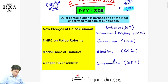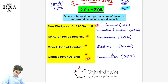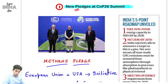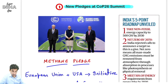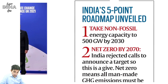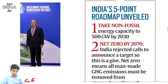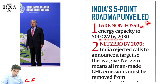Today is 5th November 2021. Aaj yeh chaar topics hum dekhenge: pehla topic hai Environment GS3, International Relations GS2. COP26 ka abhi meeting hua. COP26 mein India ne 5 baatein batayi, 5-point road map anveil kiya. Prime Minister sahab ne pehla point bataya: take non-fossil fuel energy capacity to 500 gigawatt by 2030 - matlab renewables jo hain wo 500 gigawatt tak energy generate karenge by 2030.